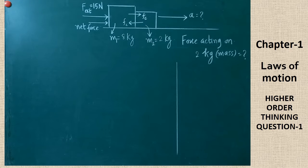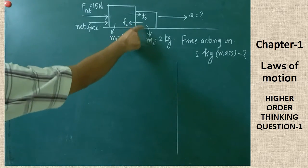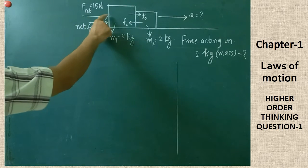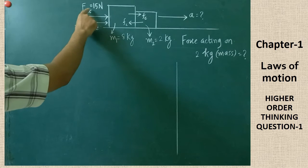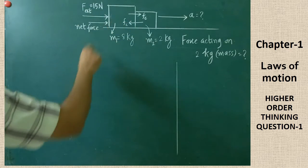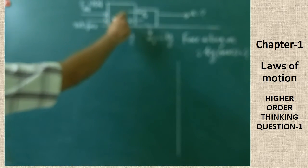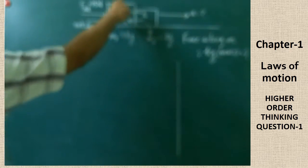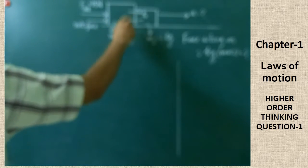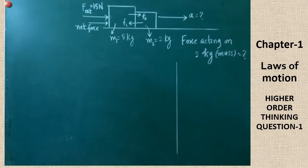Here, two masses are given: mass m1 is 8 kg and mass m2 is 2 kg, and both are in contact. On the first mass, an external force of 15 N is acting. Since both are in contact, both masses will be moving together — it has to be taken as a single system because of the application of force. So they will have a common acceleration.